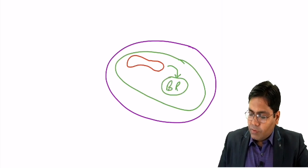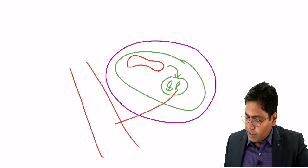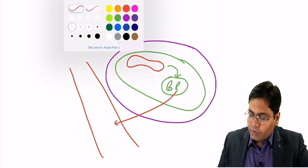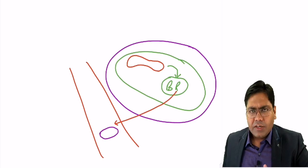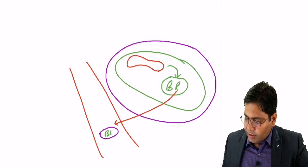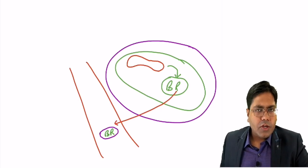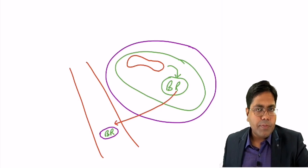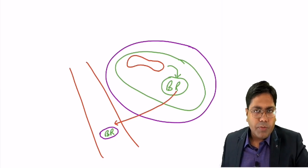This bilirubin then comes into circulation. It will bind to a protein known as a bilirubin-binding protein, most often albumin. This bilirubin is water insoluble, so when it binds to this protein, it becomes water soluble and can be circulated throughout the body.